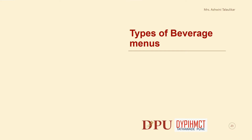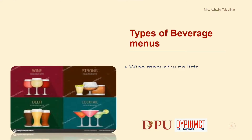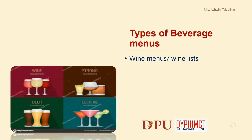The various types of beverage menus are numerous, but for simplicity they may be grouped as being of four kinds: wine menus, bar menus, and special promotion beverage menus. We shall now discuss the wine menus or wine list.